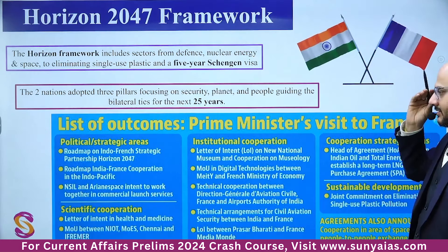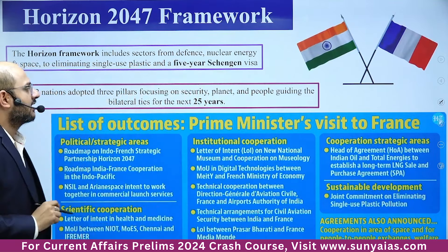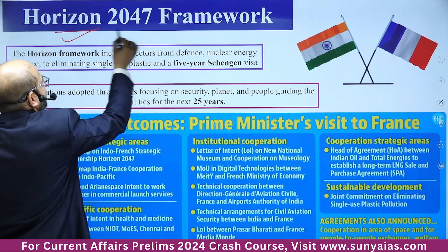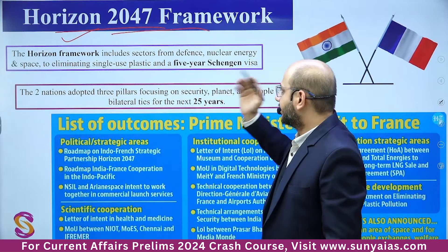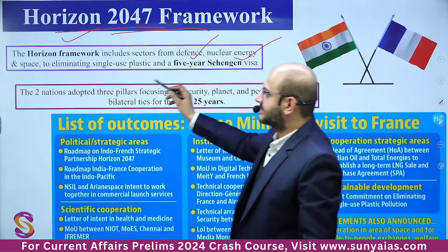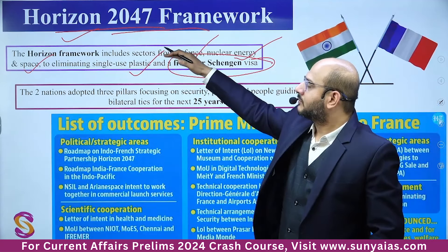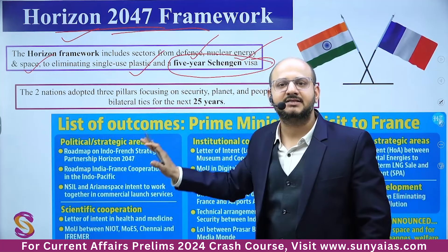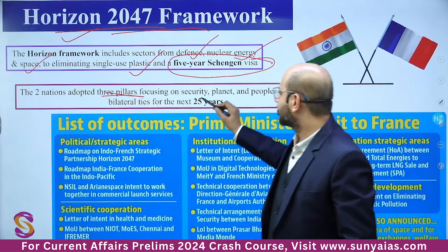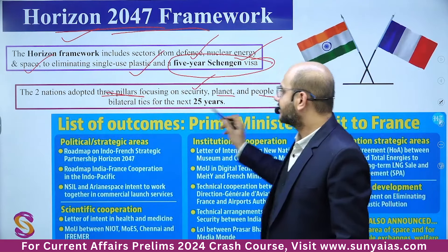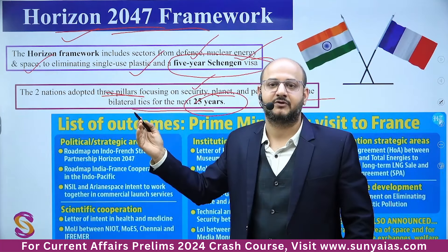The Horizon 2047 Framework is an umbrella agreement signed between India and France for the next 25 years, focusing on three pillars: security, planet, and people. It covers domains including defense, nuclear energy, space, elimination of single-use plastics, and a five-year visa plan. This is relevant for questions like 'between which two countries was the Horizon 2047 Framework signed?' — similar to how UPSC asked about OBOR in 2016 Prelims. By 2047, India is projected to become a developed nation.